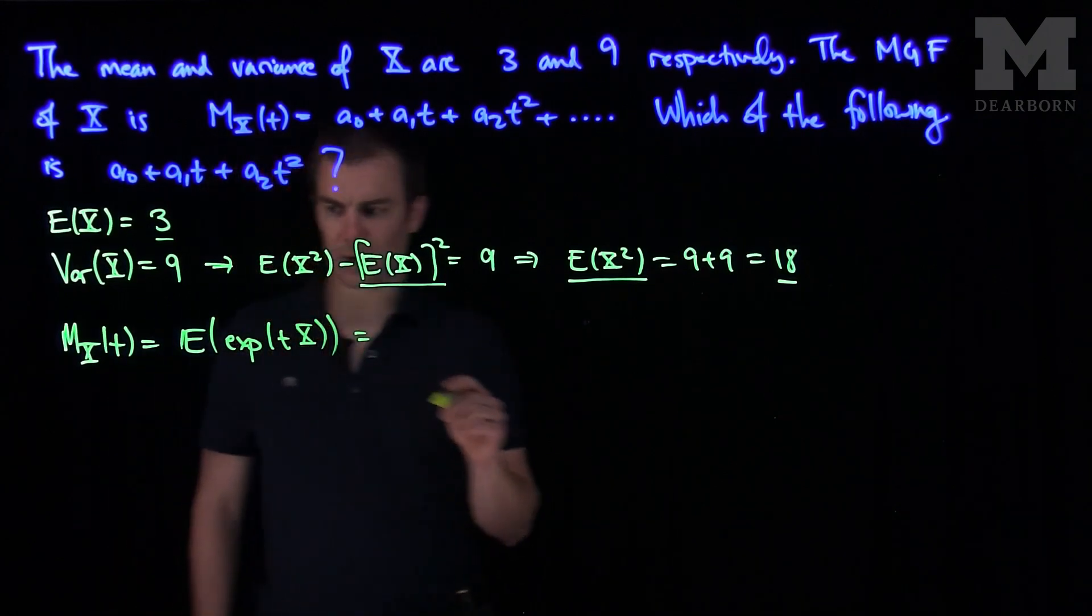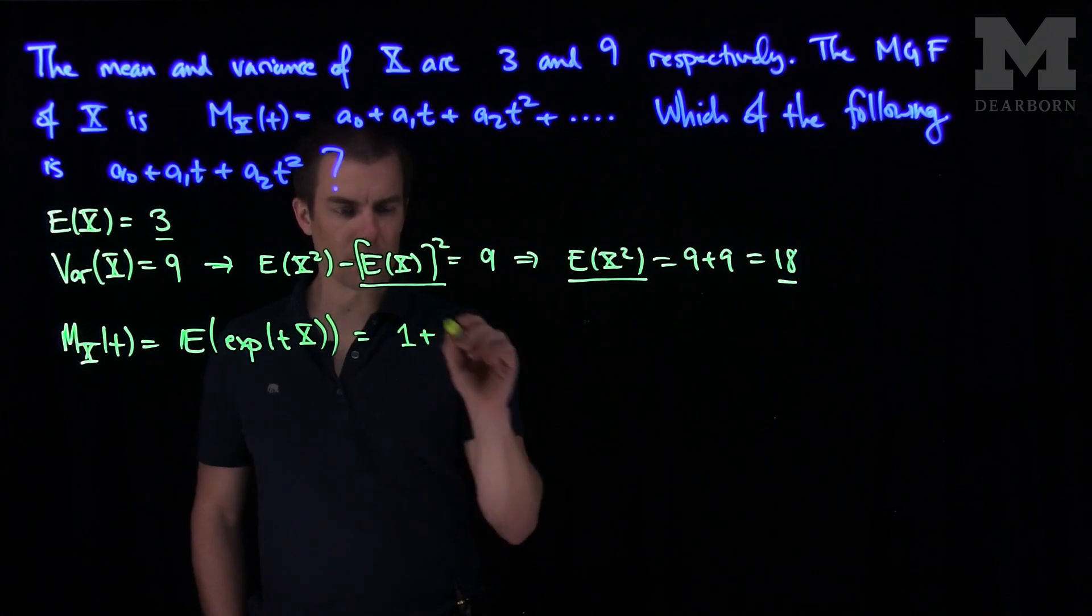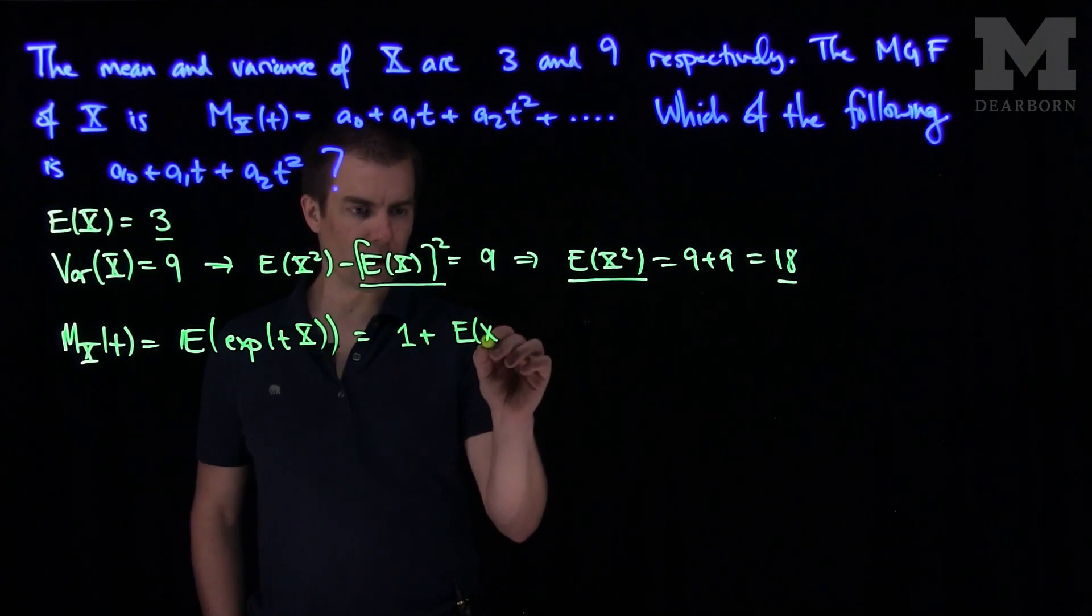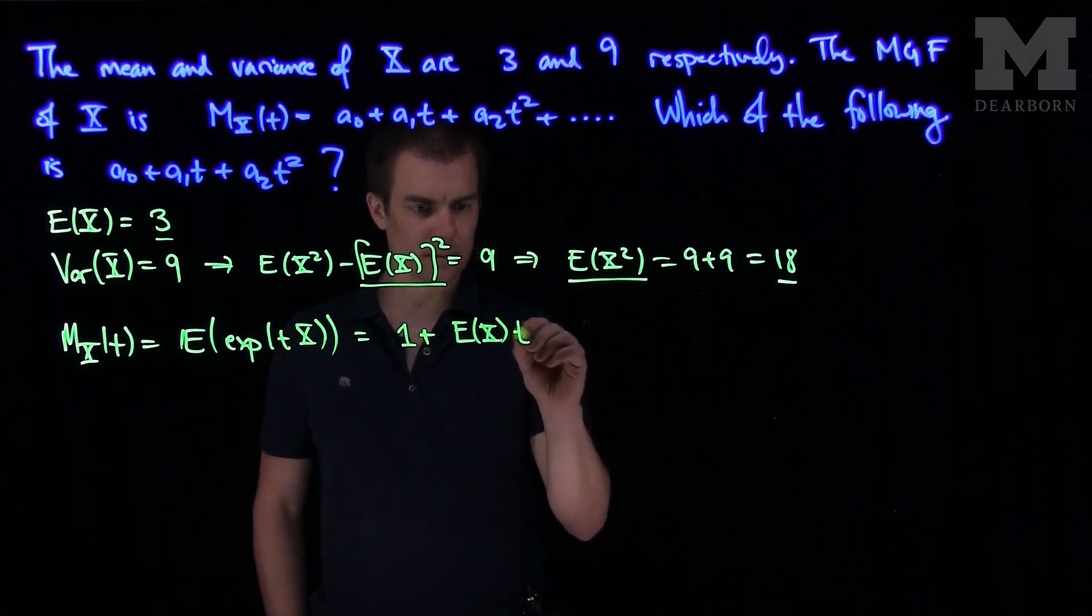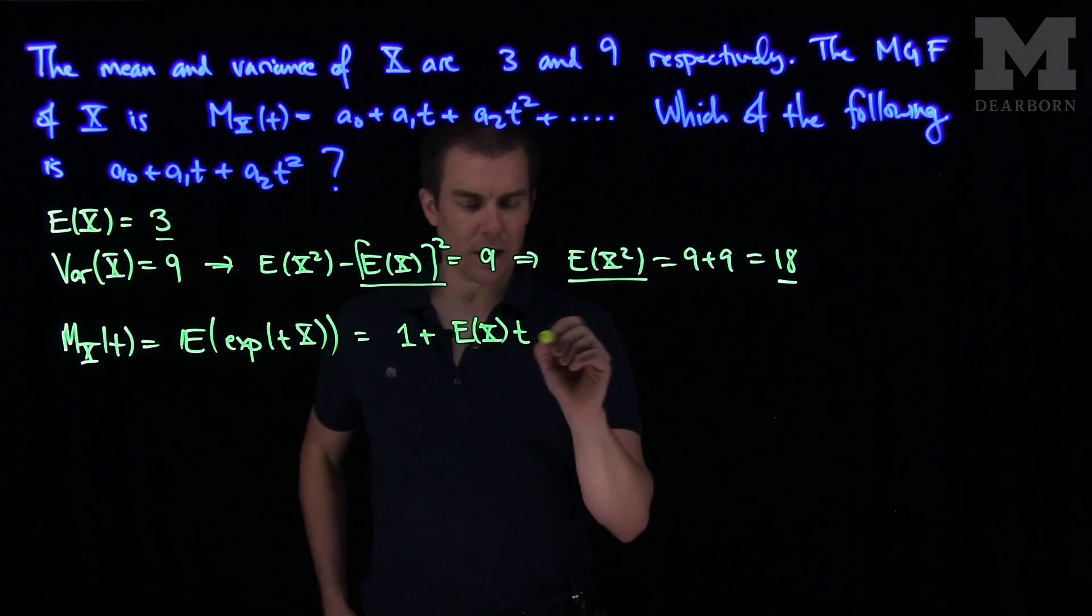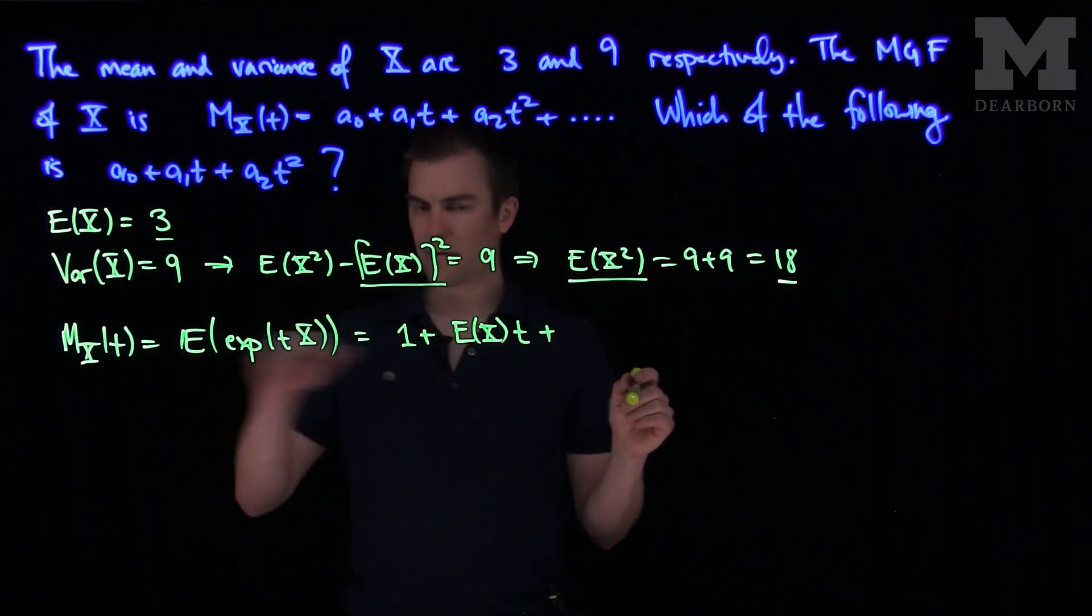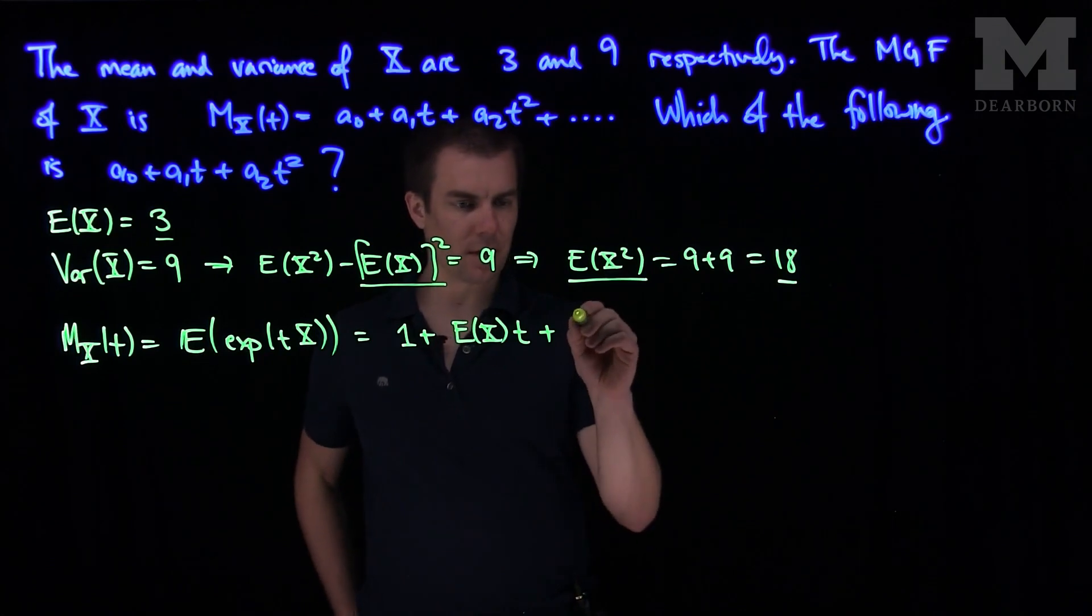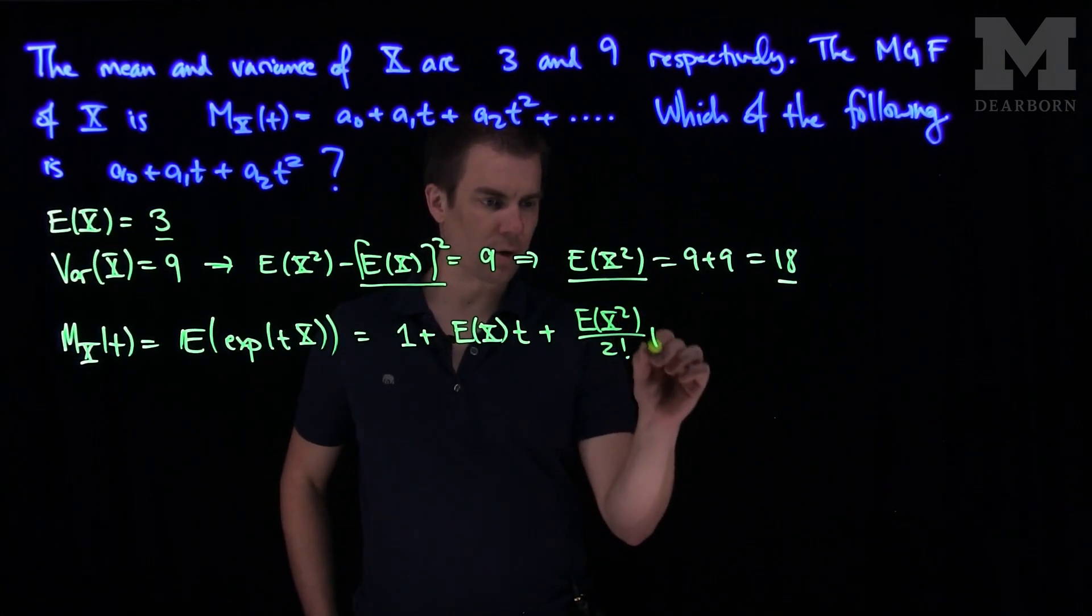And what it is as an infinite series in t is 1 plus the expected value of X times t. That's the first moment. And then it will be the expected value of X squared over 2 factorial t squared and so on.